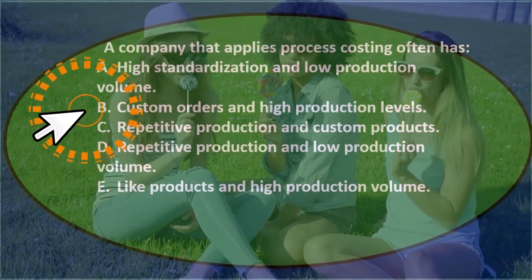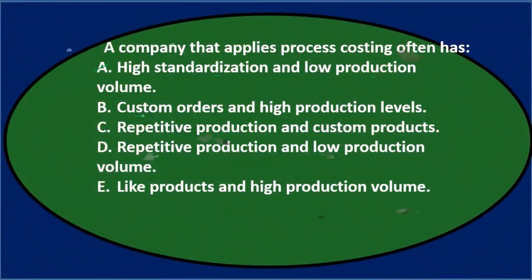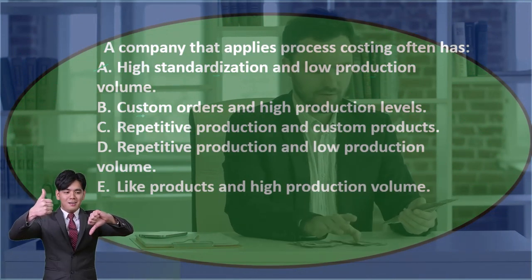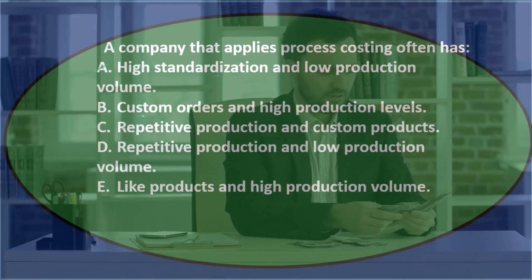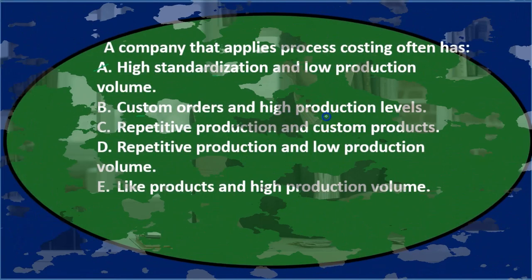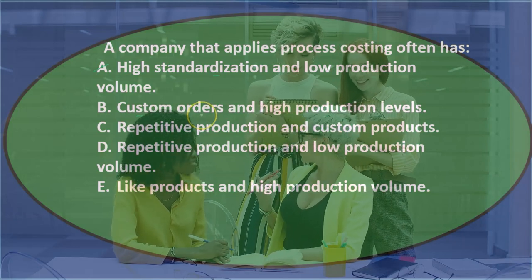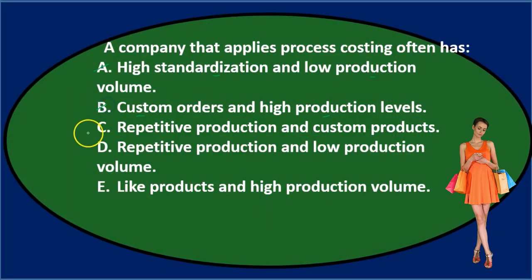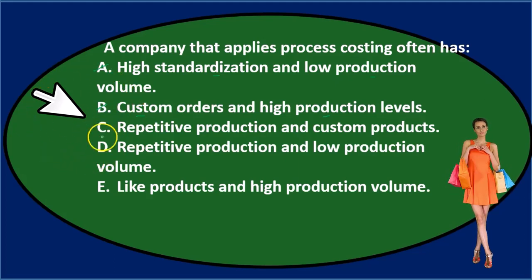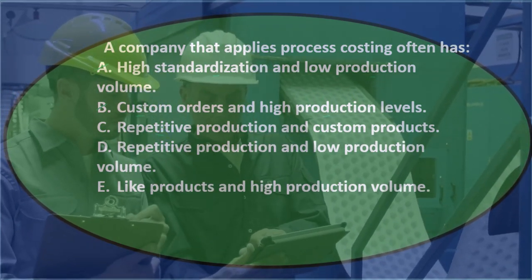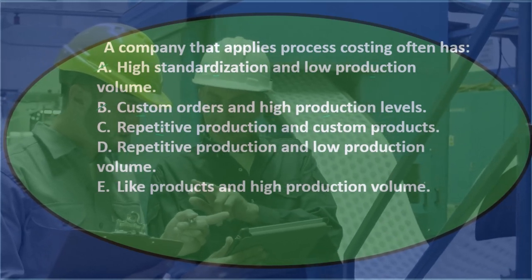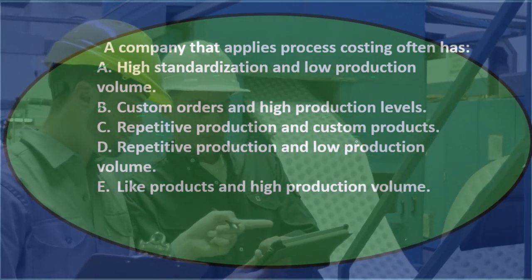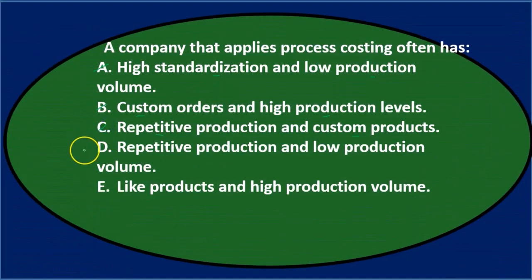Option B: custom orders and high production volume. Custom orders indicate a job cost system, not process costing. And you can't have high production levels with customized orders because each one requires individual attention. Option C: repetitive production and custom products. Repetitive production fits process costing, but custom products contradict it — if it's repetitive, it's not custom.